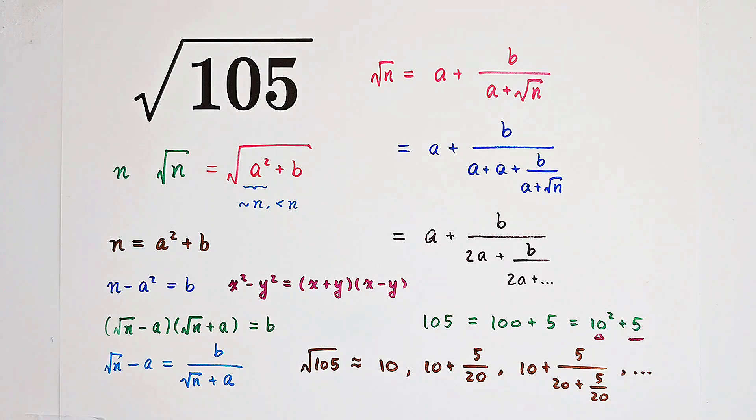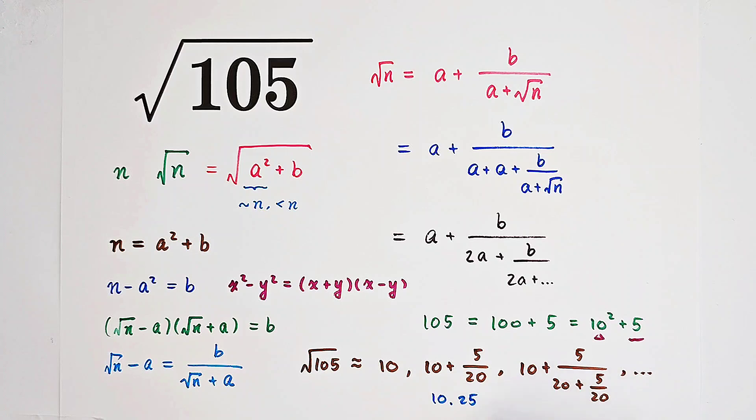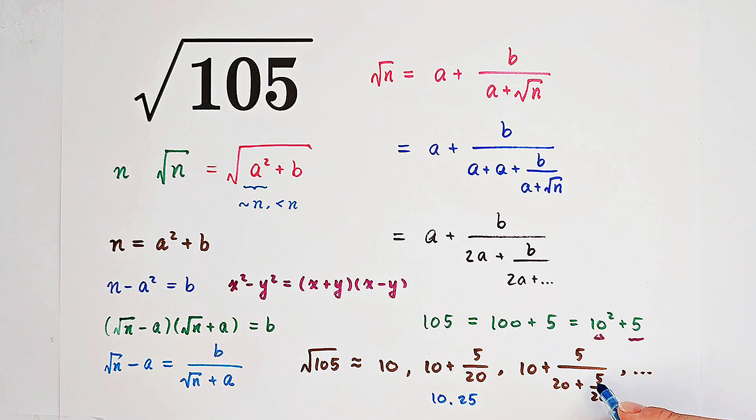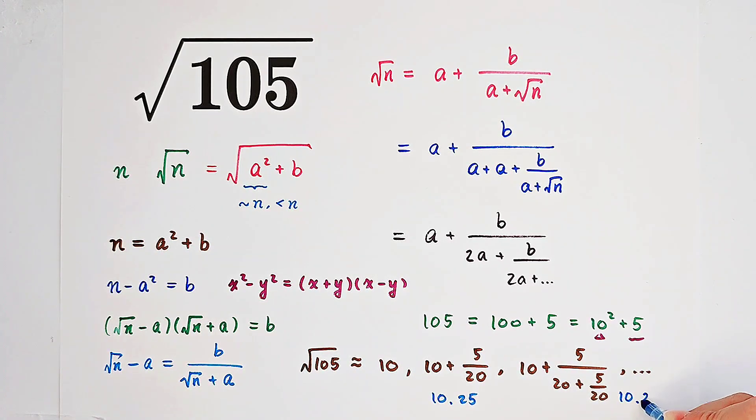So, here we have 10.25. And over here we have 10 plus 5 over 20.25. And it's approximately equal to 10.2469.